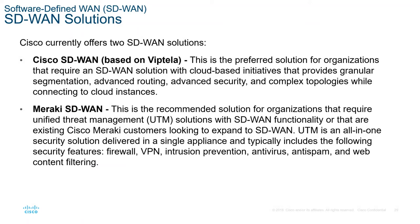UTM is an all-in-one security solution delivered in a single appliance, typically including the following security features: firewall, VPN, intrusion prevention or IPS, antivirus, anti-spam, and web content filtering.